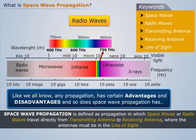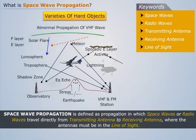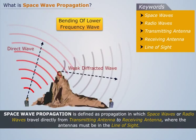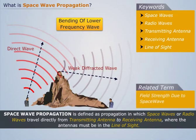Like we all know, any propagation has certain advantages and disadvantages, and so does space wave propagation. Space waves reflect off hard objects and may be blocked if the object is between the transmitter and receiver. Other limitations include that these waves are limited to the curvature of the earth and even bend if the waves have lower frequency.